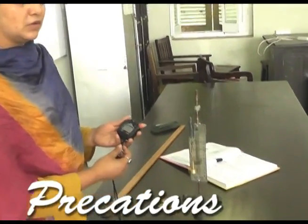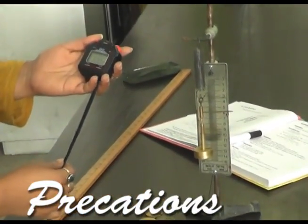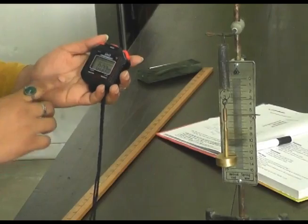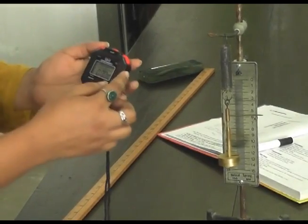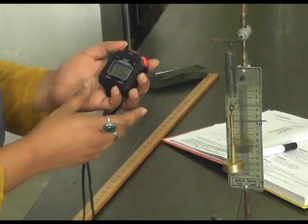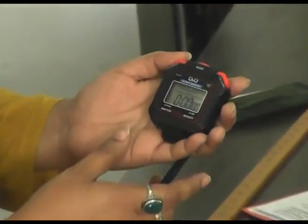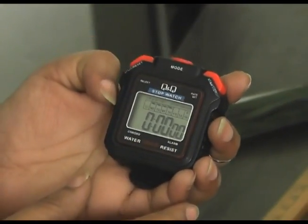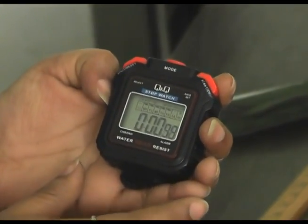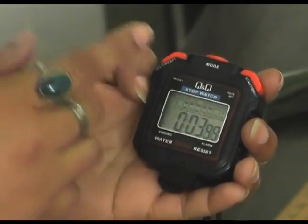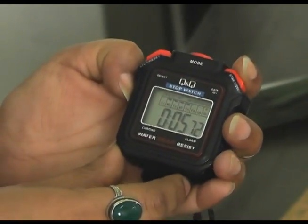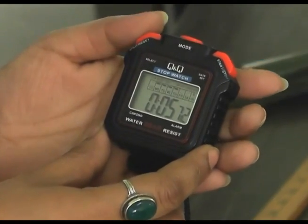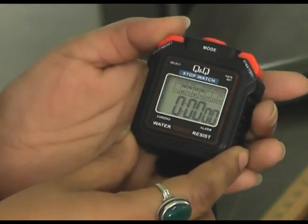The last and most important precaution about this experiment is how you can use the stopwatch. First of all, you have to check how we can use this. This is the reset button. This is the start and stop button. First, you have to reset your stopwatch and it will show the reading 00 on its display. After that, you can check its start button. It starts counting the seconds, and when your oscillations are complete, you can easily stop this by using stop button. After taking one reading, you can also reset it to its zero value.